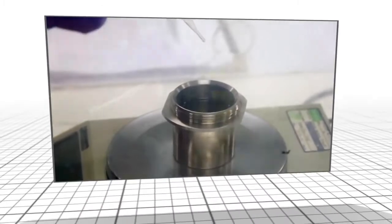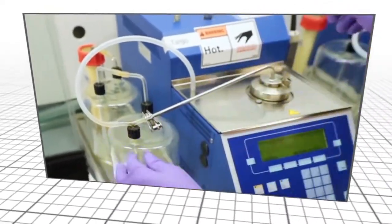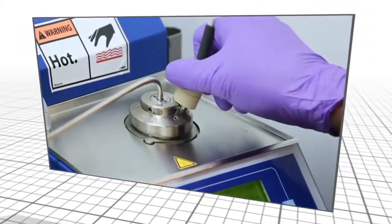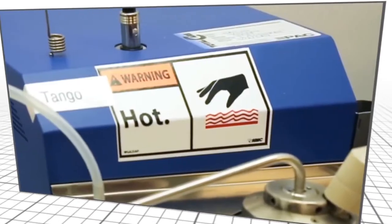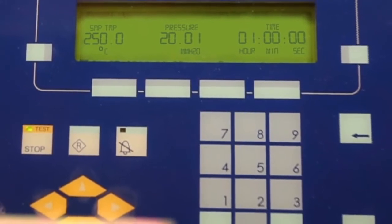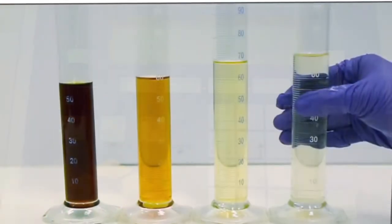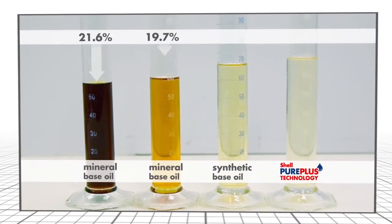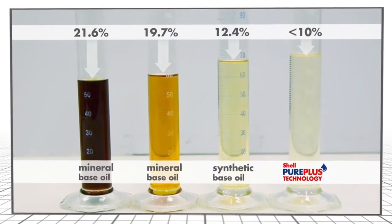Oils at high engine temperatures are prone to evaporation. Shell subjected Pure Plus technology base oils to the industry standard NOAC test, which required heating the oil to 250 degrees centigrade for one hour. It's clear from the results that the Pure Plus technology oil has superior resistance to evaporation.